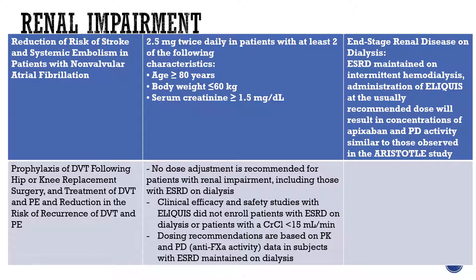For patients with renal impairment, for the indication of reduction of risk of stroke in non-valvular atrial fibrillation, the recommended dose is 2.5 milligrams twice daily in patients with at least two of the following: age ≥80 years, body weight ≤60 kilograms, or serum creatinine ≥1.5 mg/dL. For patients with end-stage renal disease on dialysis, clinical studies with Eliquis did not enroll such patients. In those maintained on intermittent hemodialysis, administration at the usually recommended dose results in apixaban concentrations and pharmacodynamic activity similar to those observed in the ARISTOTLE study.